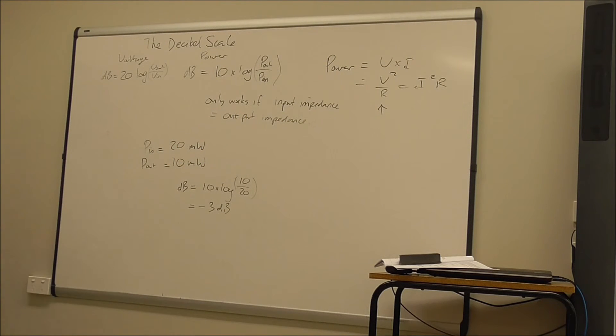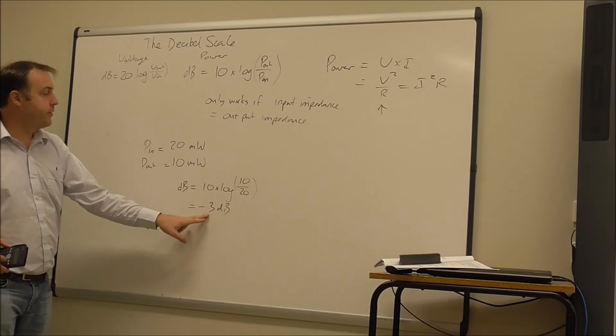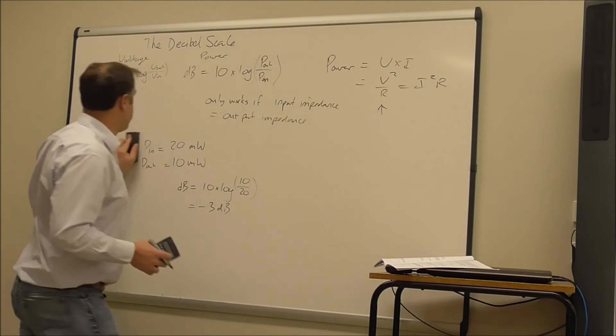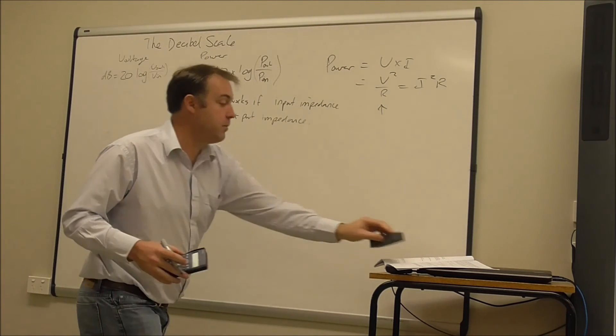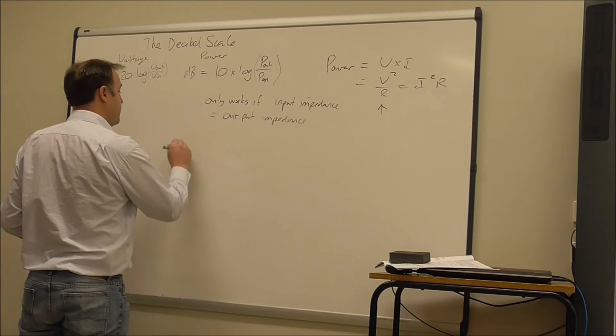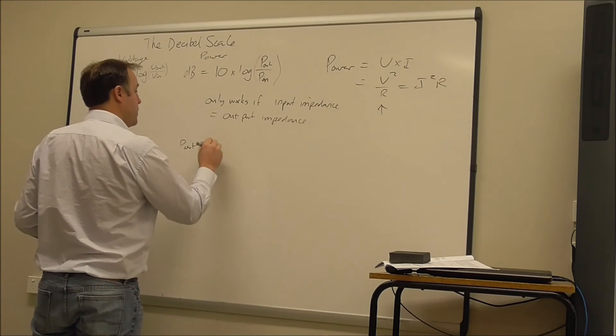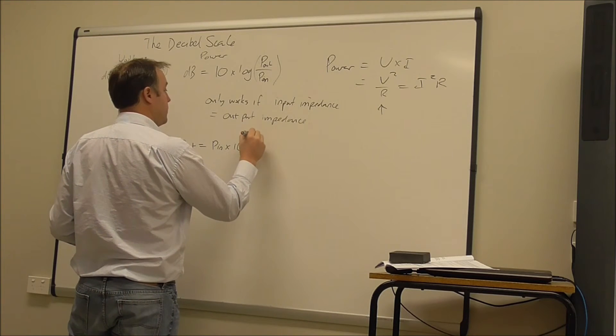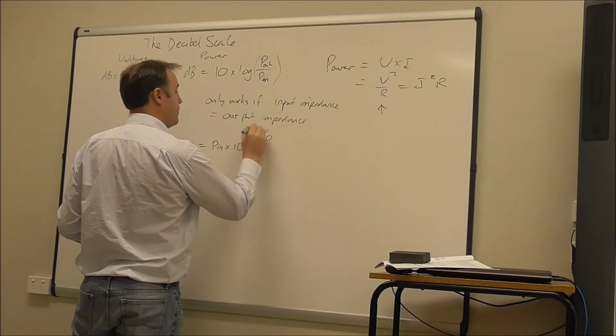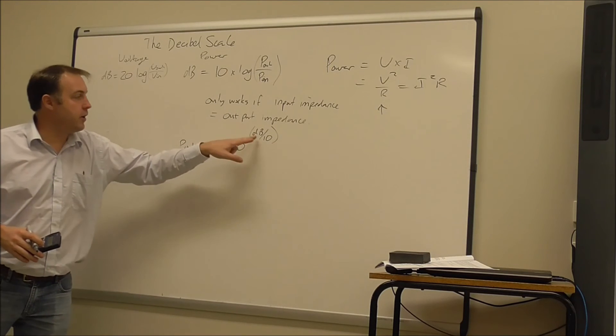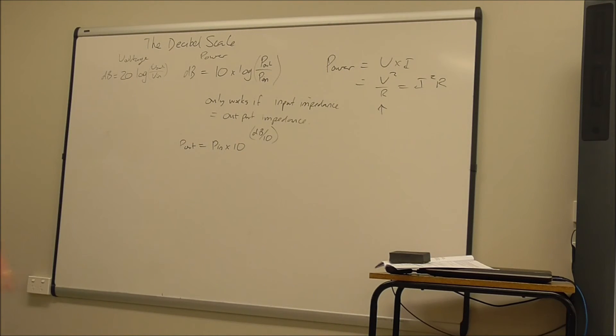Likewise, if we have a gain in decibels, and let's say an input power, we can calculate the output power. So I'll write the transposed equation. And you'll find that it's actually very similar to the transposed equation I had for the voltage decibel gain. So P out equals P in times 10 to the power of the decibels divided by 10. So if I want to find the output power given the input power and the decibels, I need to use that. So this is the transposed equation.